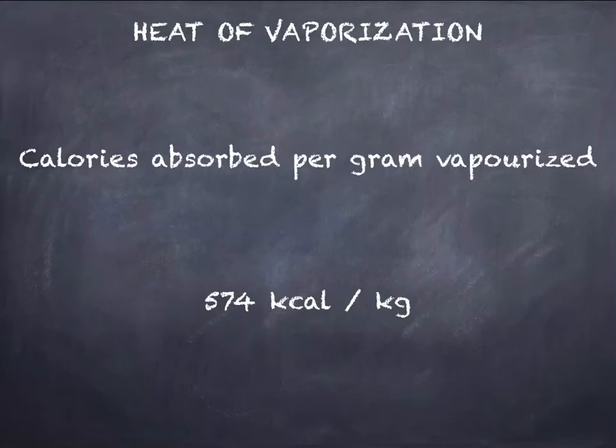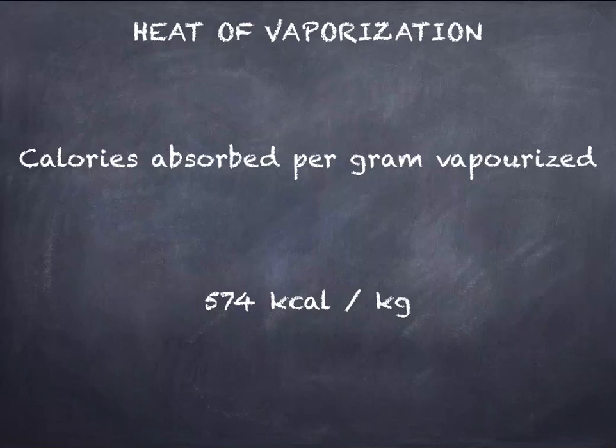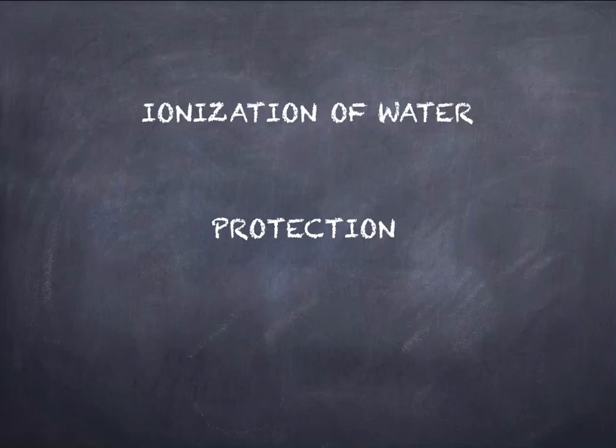The next property is the heat of vaporization. It is defined as the calories absorbed per gram vaporized. The amount of energy required for this process is 574 kilocalories per kilogram at 100 degrees centigrade. This cooling process is seen in plants, where we call it transpiration, and in humans, we call the process sweating.